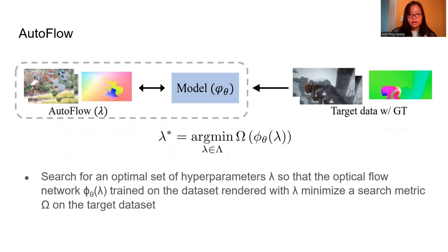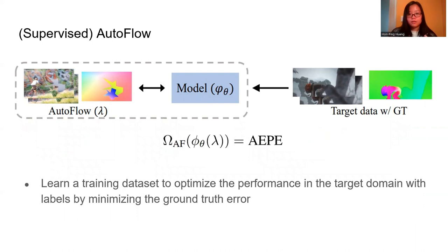The search metric is defined as the ground truth error using the labels in the target domain, so that Autoflow will learn a training dataset to optimize performance in the target domain by minimizing the ground truth error.